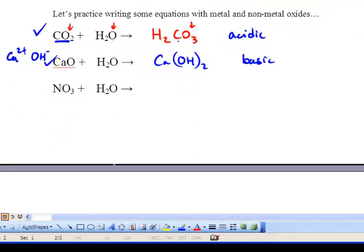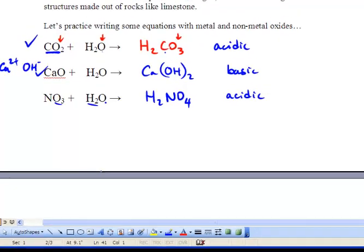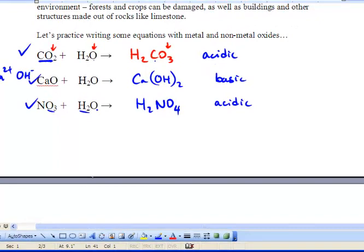We've got NO3 plus H2O and because this is a non-metal oxide, we're going to get an acidic solution and we get H2NO4. We had two H's and we had three O's plus one more O, we get four and this is balanced.